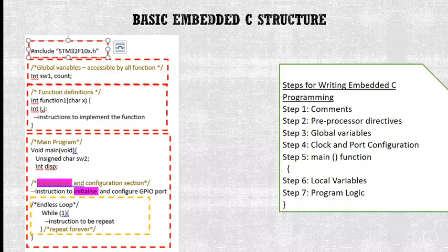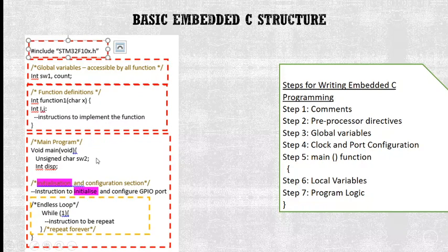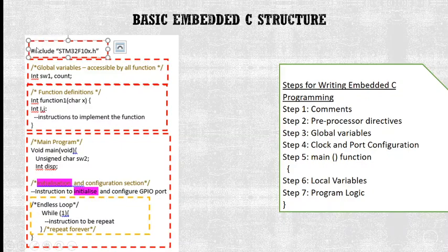The basic structure of embedded C programming is a collection of one or more functions. Every function is a collection of statements used to perform specific tasks. The figure shows the basic structure. We start our program with a header — for example, for our STM32F103 tutorial, we type: #include stm32f10x.